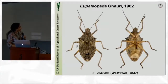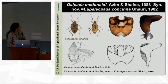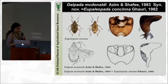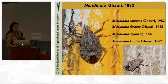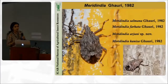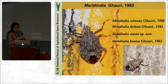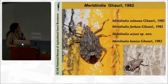Eupaliopoda is a monotypic genus. It was found that Dalpada mcdonaldi, described by Azim and Shafi, is nothing but Eupaliopoda mcdonaldi — so it is synonymized with that. Married India — the majority of these species and genera are restricted to Asia, especially India and Pakistan, not reported from other parts of the world except India or neighboring countries. Married India is also restricted to India, probably some to Sri Lanka also. These are the four species: Married India Salmana and Married India Farata. The shape of the paramere has a kind of C-shape.